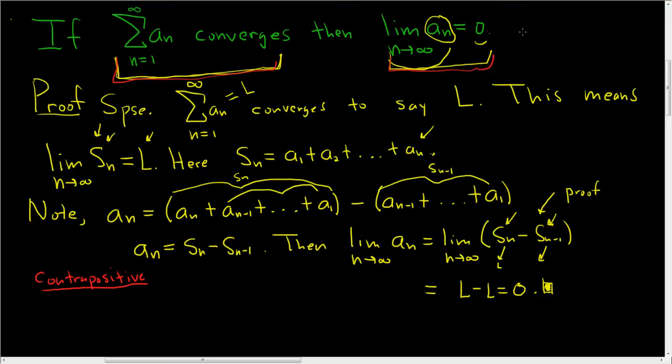So the contrapositive will say if this is not true, then this is not true. So what does it mean for this not to be true? Well, it means that the limit as n approaches infinity of a sub n is not equal to 0.